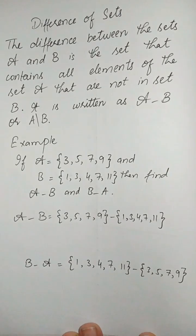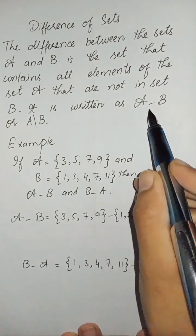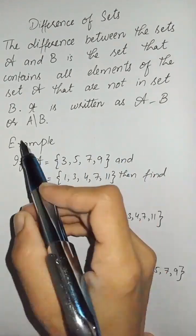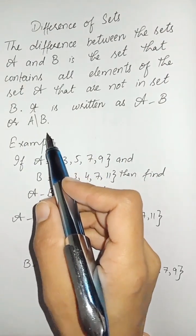Difference of sets. The difference between the sets A and B is a set that contains all elements of set A that are not in set B. It is written as A minus B or A slash B.